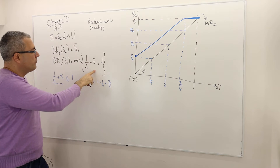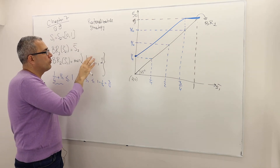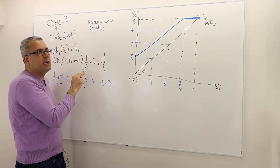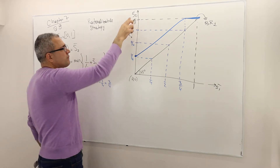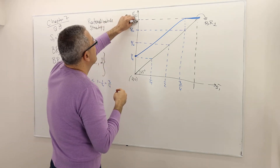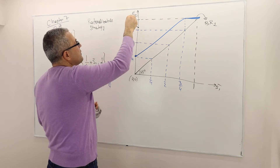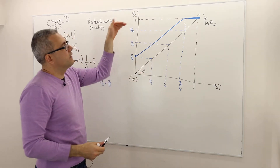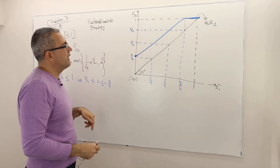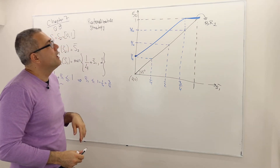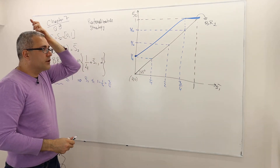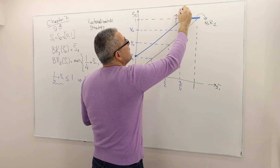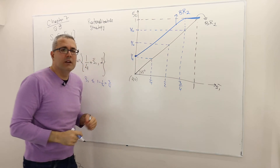From s1-bar = 3/4 onward, 1/4 + s1-bar would exceed 1, but strategies above 1 are not available. Therefore, the best response becomes flat at 1 from that point on. That's BR2: starting at 1/4, increasing linearly to the point (3/4, 1), then flat at 1.